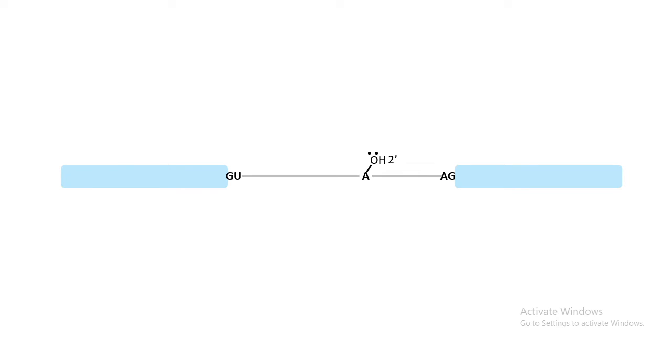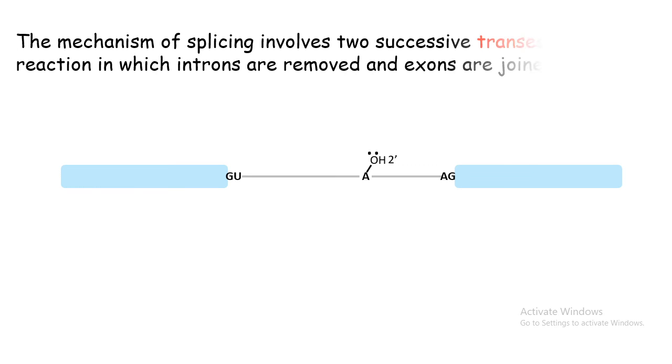The 5 prime splice site has a conserved GU sequence whereas the 3 prime splice site has an AG sequence. These sequences help the machinery to recognize it. Let's understand the chemistry of it. Let us assume this is the simplified diagram of the gene where blue are the exons and the intervening sequences are the introns. First what happens is a nucleophilic attack.